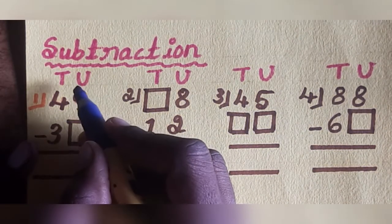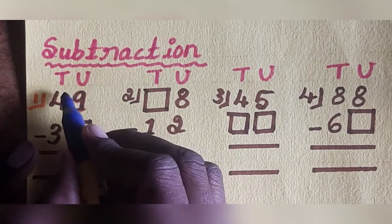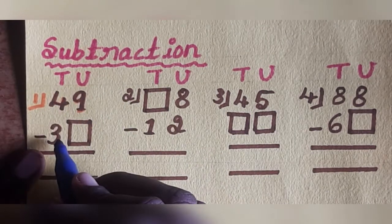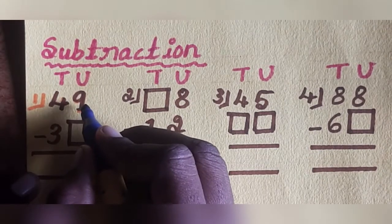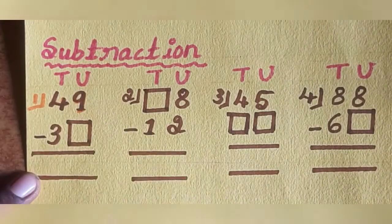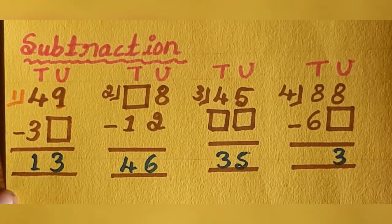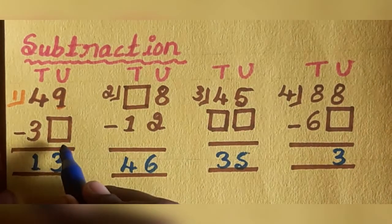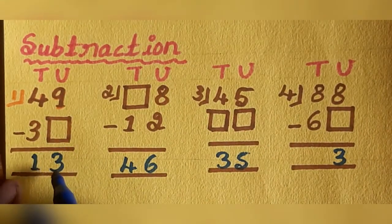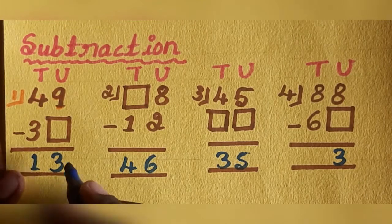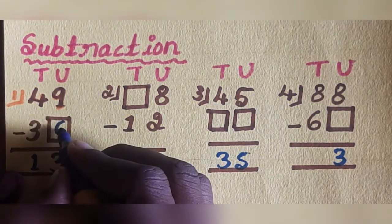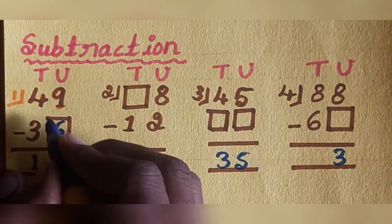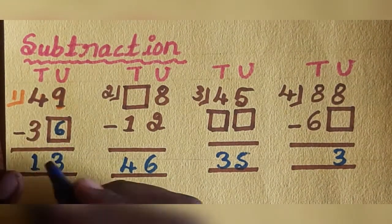Next activity is subtraction. First: 49 minus blank. Units: 9 — how many numbers? Balance is 3. So 9 minus 6, balance is 3. Next, tens: 4 minus 3 equals 1.